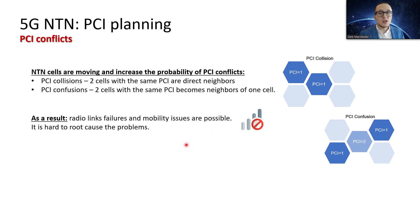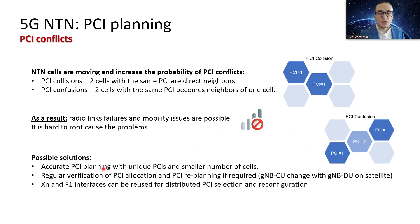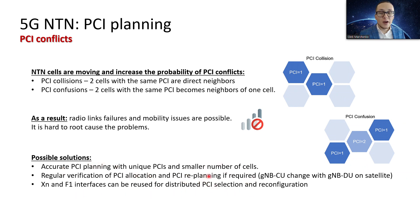A lot of possible radio link failures and mobility issues can occur in both cases, and sometimes it can be very hard to find the real reason for those problems. Well-known solutions include accurate PCI planning and allocating unique PCIs, especially for a smaller number of cells. PCI verification and replanning is also required.